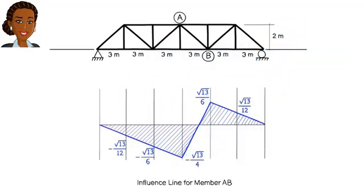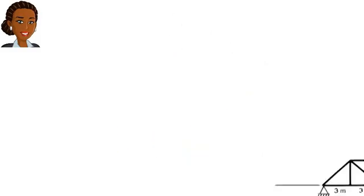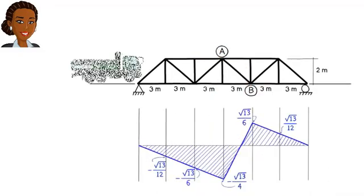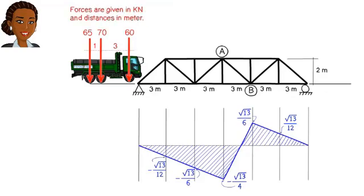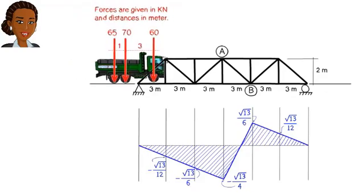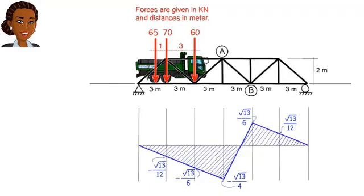We are now in a position to determine the maximum effect that the moving load series would have on member AB. Let's start by assuming that the truck is at this position on the bridge. This means the three concentrated loads are bearing down on the truss here, here, and here. Let's refer to these points as x, y, and z.